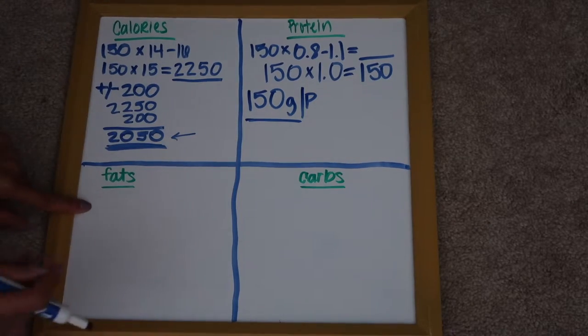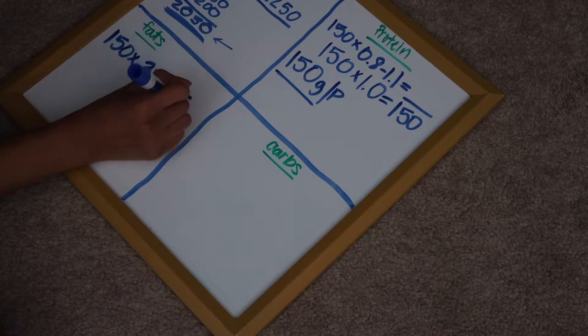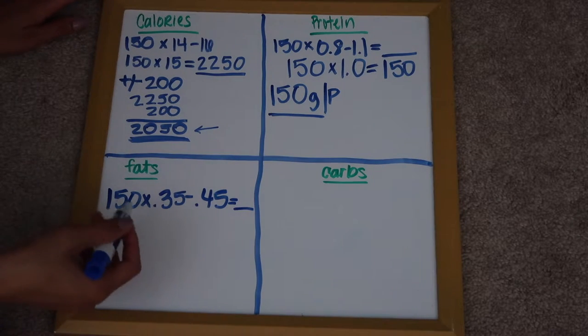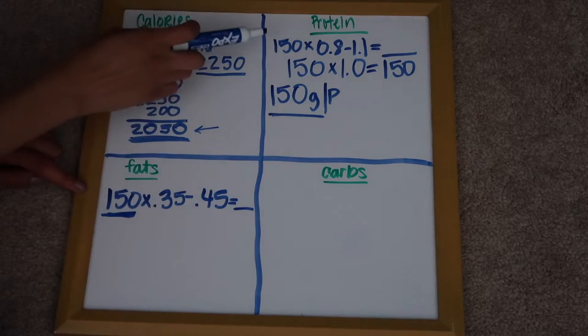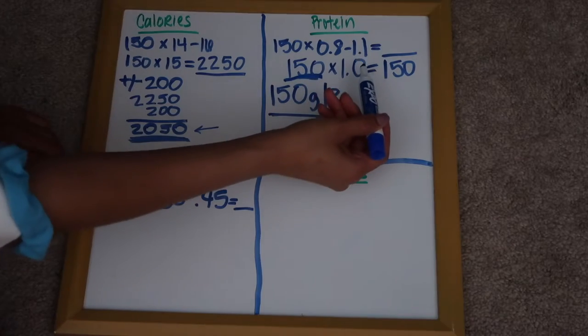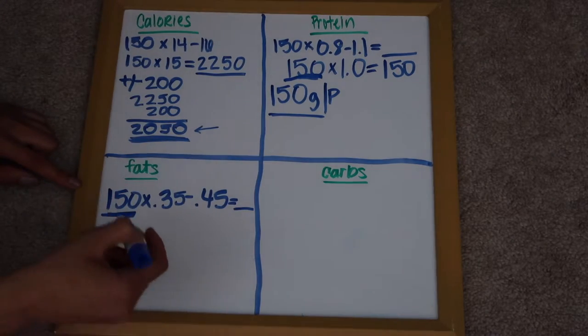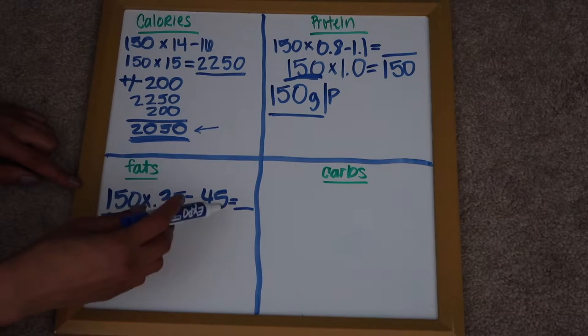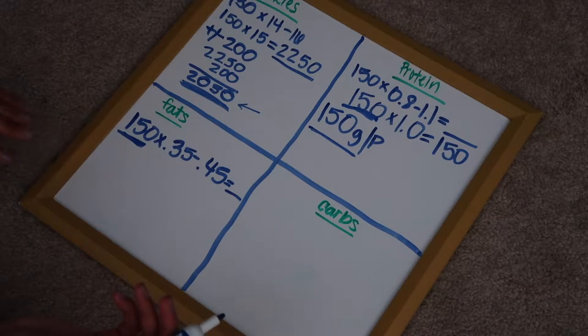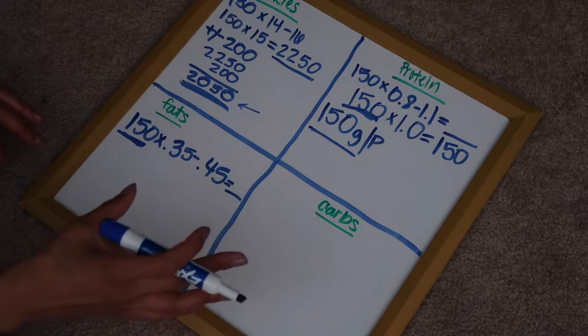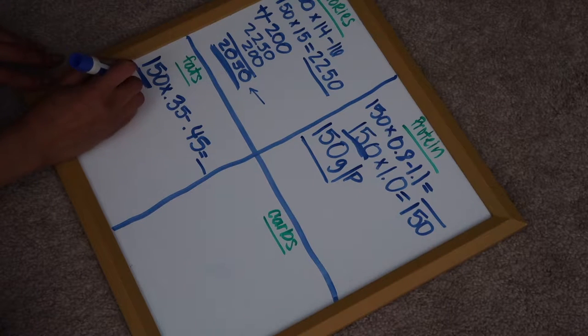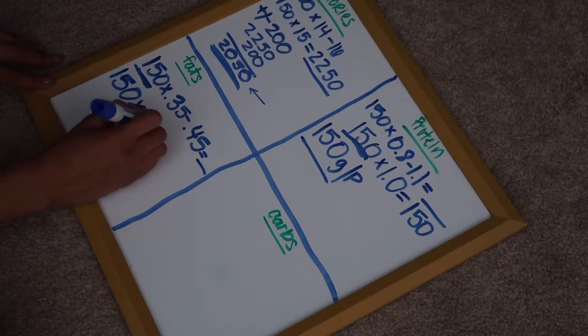Now we're going to move down here to fat. So here I am with the fat. This is your equation. I'm taking my weight. I hope I didn't forget to mention that this is the weight I'm using. Weight times the range of numbers that you are given for each section. So for fat, you get a range of 0.35 to 0.45. So I'm going to pick 0.40 because I just kind of like to stay in the middle with mine. I'm not a super duper lean person. I'm also not a fat person.